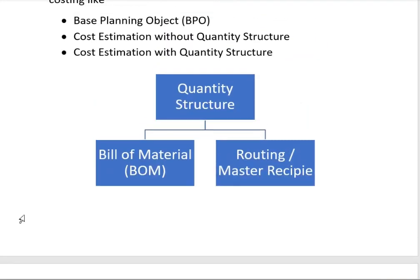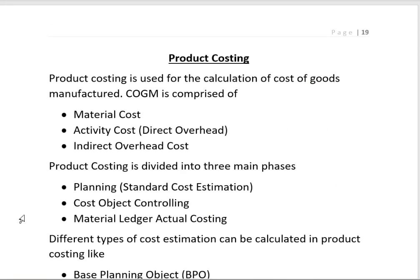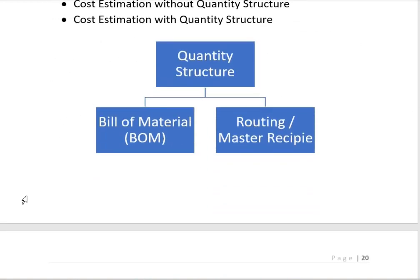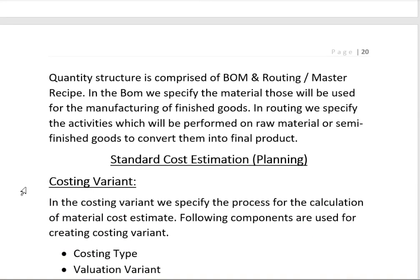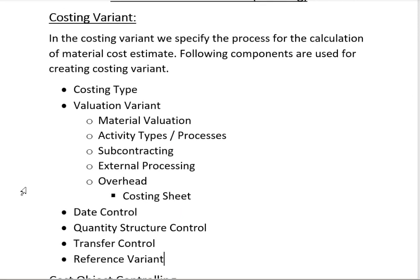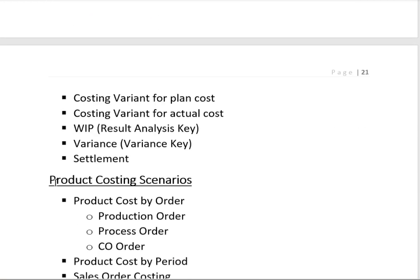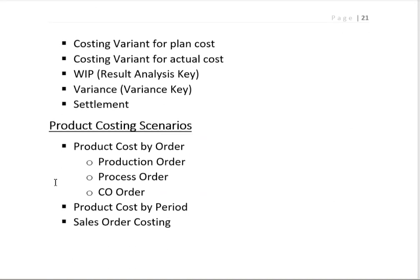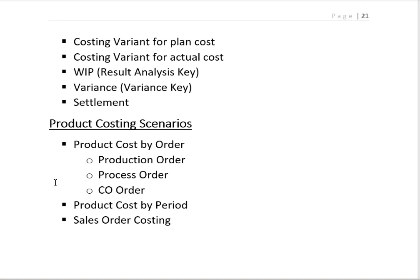This is the overview of Product Costing. In the next session we are going to start configuration. First we will create the enterprise structure for Material Management and Sales and Distribution, and then we will start the Costing Variant configuration, specifying the Costing Type and Valuation Variant. After that we will cover all the scenarios: Product Cost by Order, Product Cost by Period, and Sales Order Costing. Thank you for watching this video.